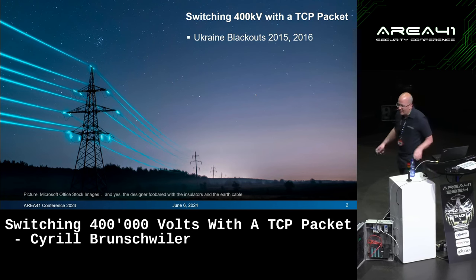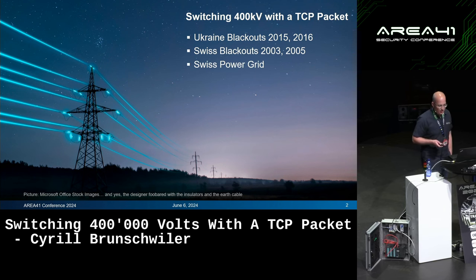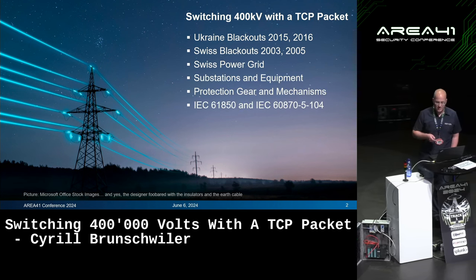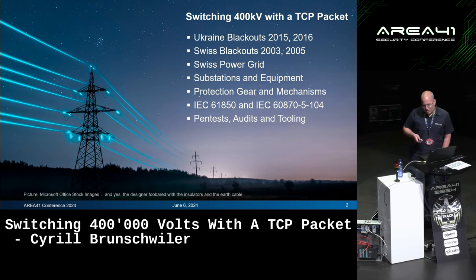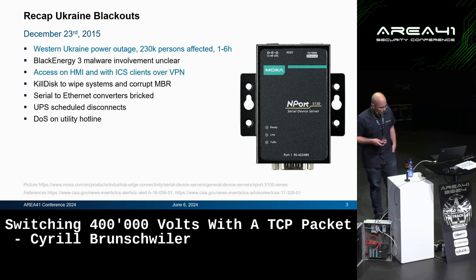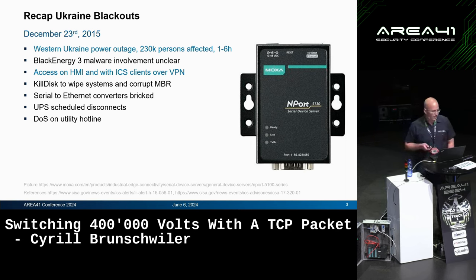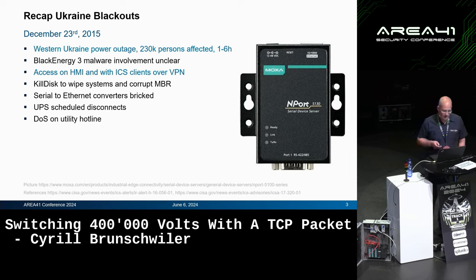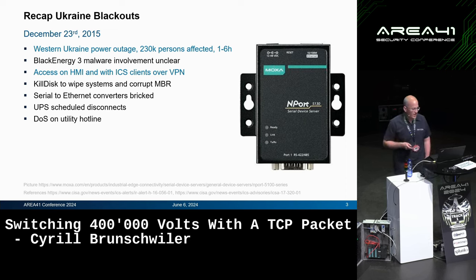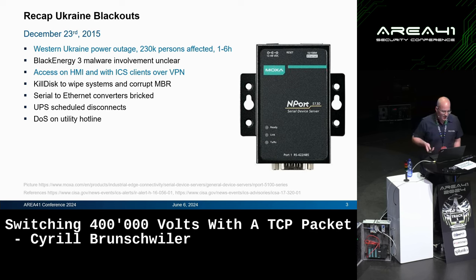I'll recap the techniques and tactics from the Ukraine blackouts ten years ago as an intro. Back on December 23rd — Christmas 2015 — 230,000 people were affected by a blackout lasting one to six hours. The attack was credential stuffing to gain VPN access. They then used standard ISIS tools and the control-and-command center HMI — what we call a GUI, they call a human machine interface — to actually disconnect some equipment.